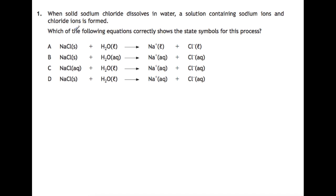Here we have question 1. When solid sodium chloride dissolves in water, a solution containing sodium ions and chloride ions is formed. Which of the following equations correctly shows the state symbols for this process? So the first part we're looking for is solid sodium chloride, so we're looking for an S in brackets after the NaCl, so we can score out C. We're dissolving it in water which is a pure liquid, so we can ignore B as well where it has water as aqueous. The ions that you'll form will be aqueous ions, so we can ignore A and your answer is then D.